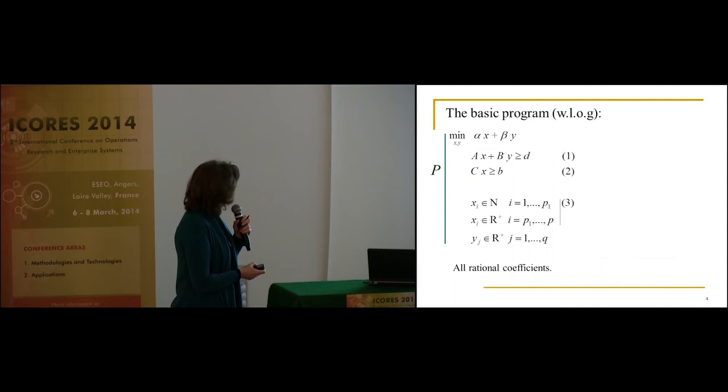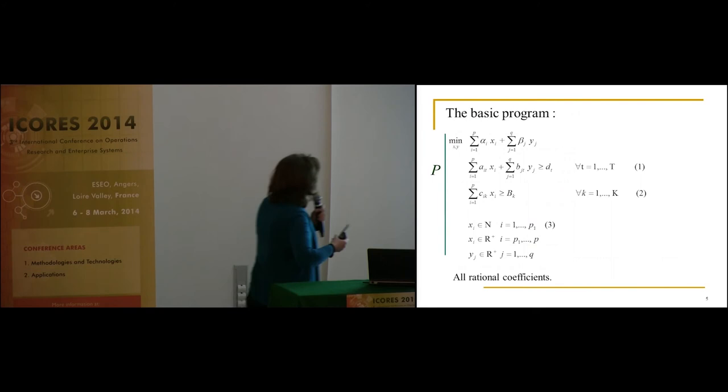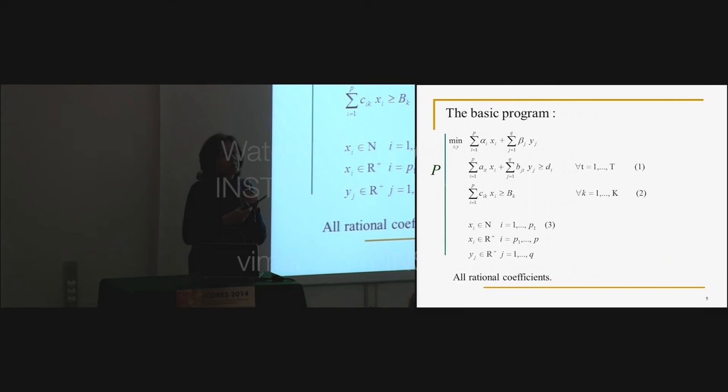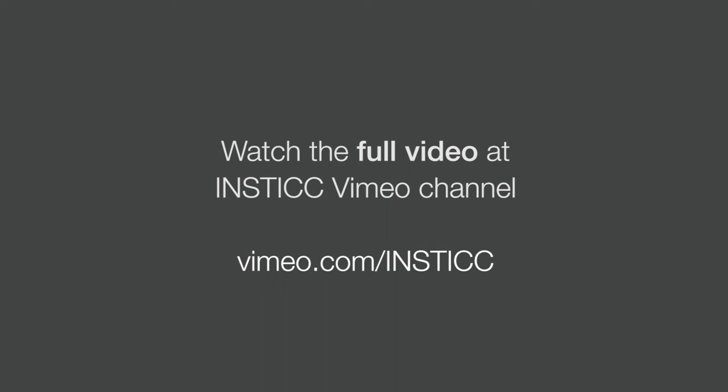Here you have a developed form of the same program. This is just to say that when I speak of the right-hand side of constraints 1, I will, without loss of generality, speak of demands which are given for time periods — but it can be anything else. I consider this basic program and I have uncertainty on the coefficients of constraints, specifically on the data of constraints 1.